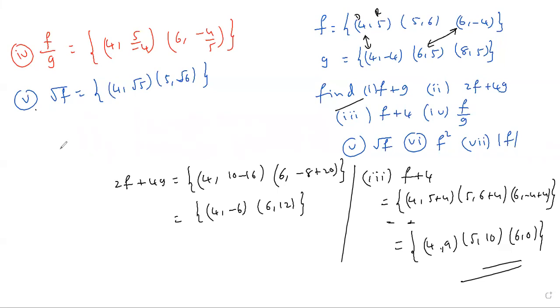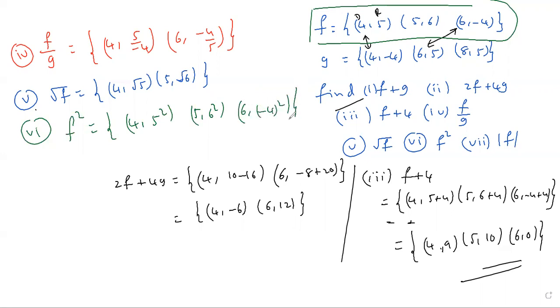Next f square, sixth one. f square, the second element range element is squared. Domain 4, range 5 squared. f and g combination here apply it. -4 square, you can write 16. Answer: (4,25), (5,36), (6,16). 7 marks, easy.